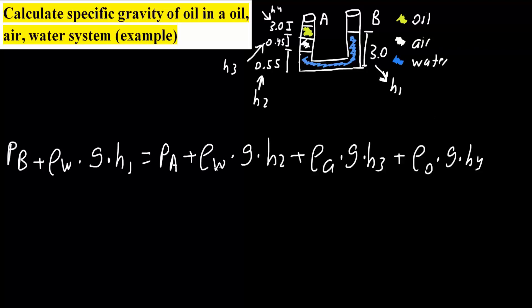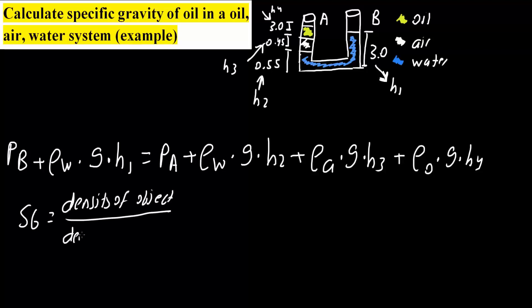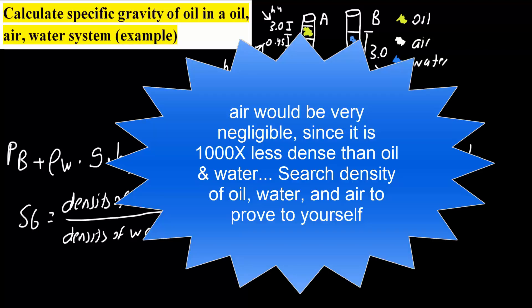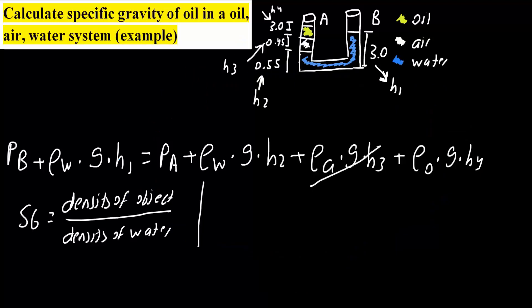We want to solve for specific gravity, which is equal to density of the object — in our case, oil — divided by density of water. Now let's look at our equation. Air is about 1,000 times less dense than oil and water, so we can ignore the air component and simply drop that term.